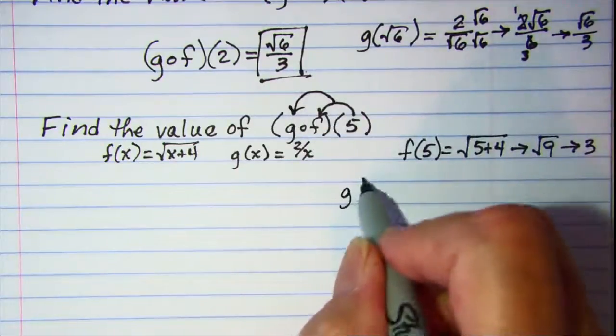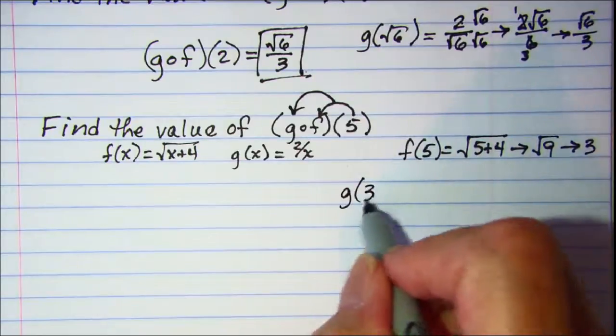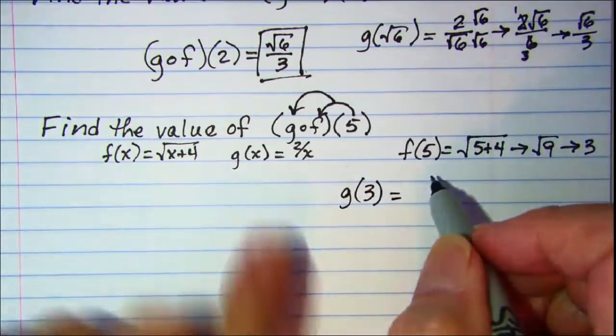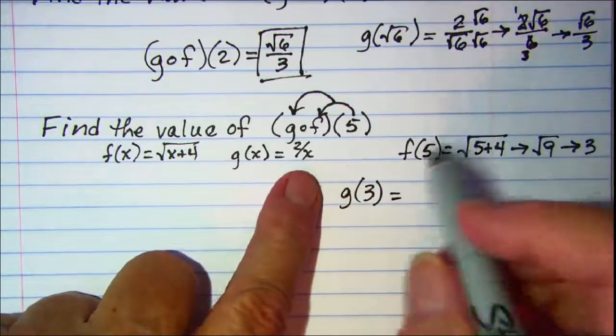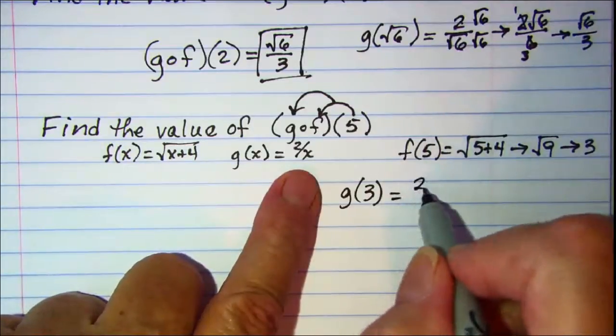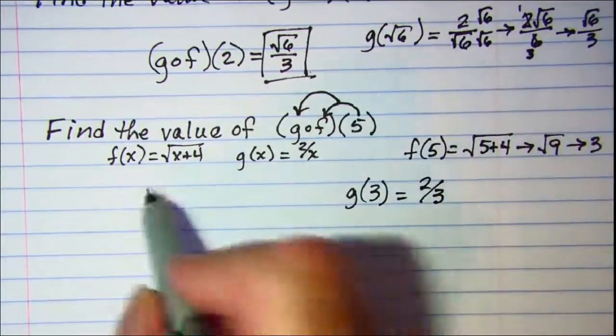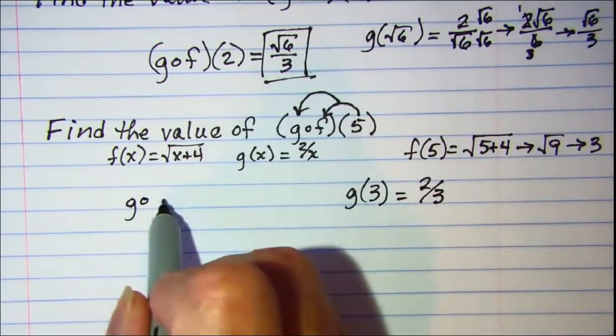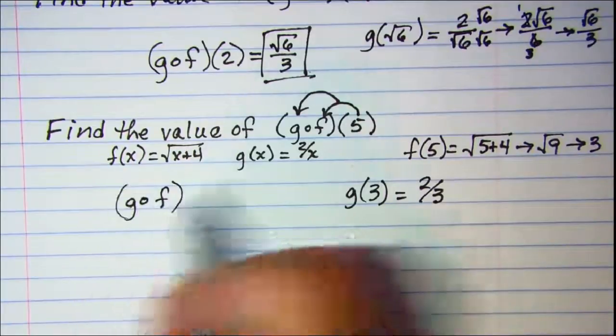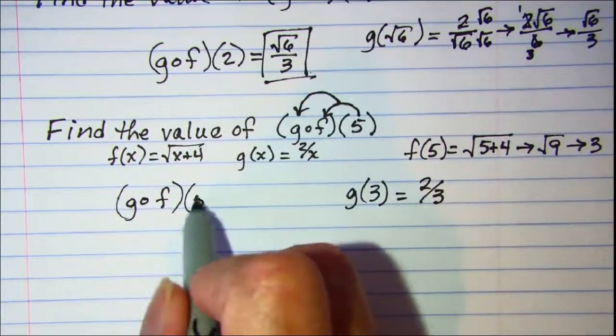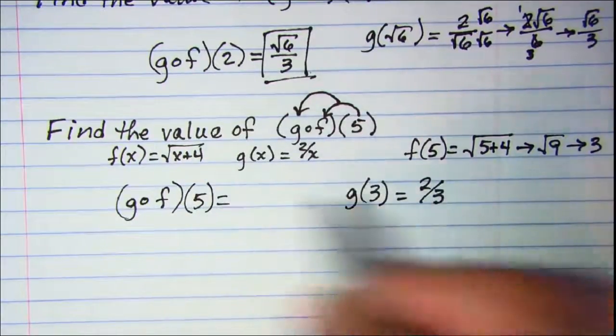And then that value, that 3, is going to be substituted into the g function. So I need g(3), and g is 2 divided by x, so 2 divided by 3. So my g∘f(5) is 2/3.